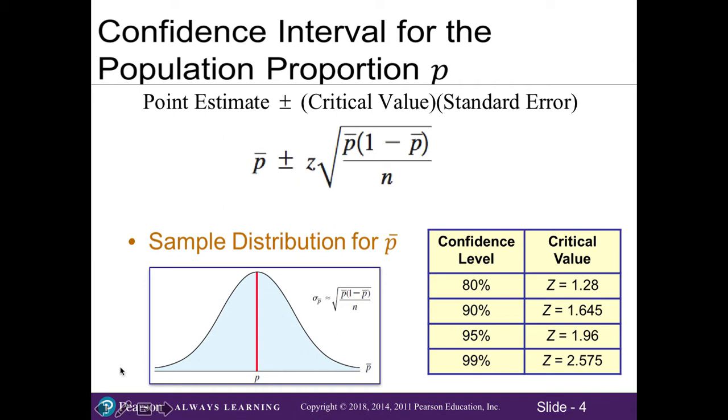Recall in Chapter 7 when we learned about sampling distributions, the sample distribution for a sample proportion is also bell-shaped, which allows us to use a lot of the same appendices and concepts as what we did with the sampling distribution for sample means.